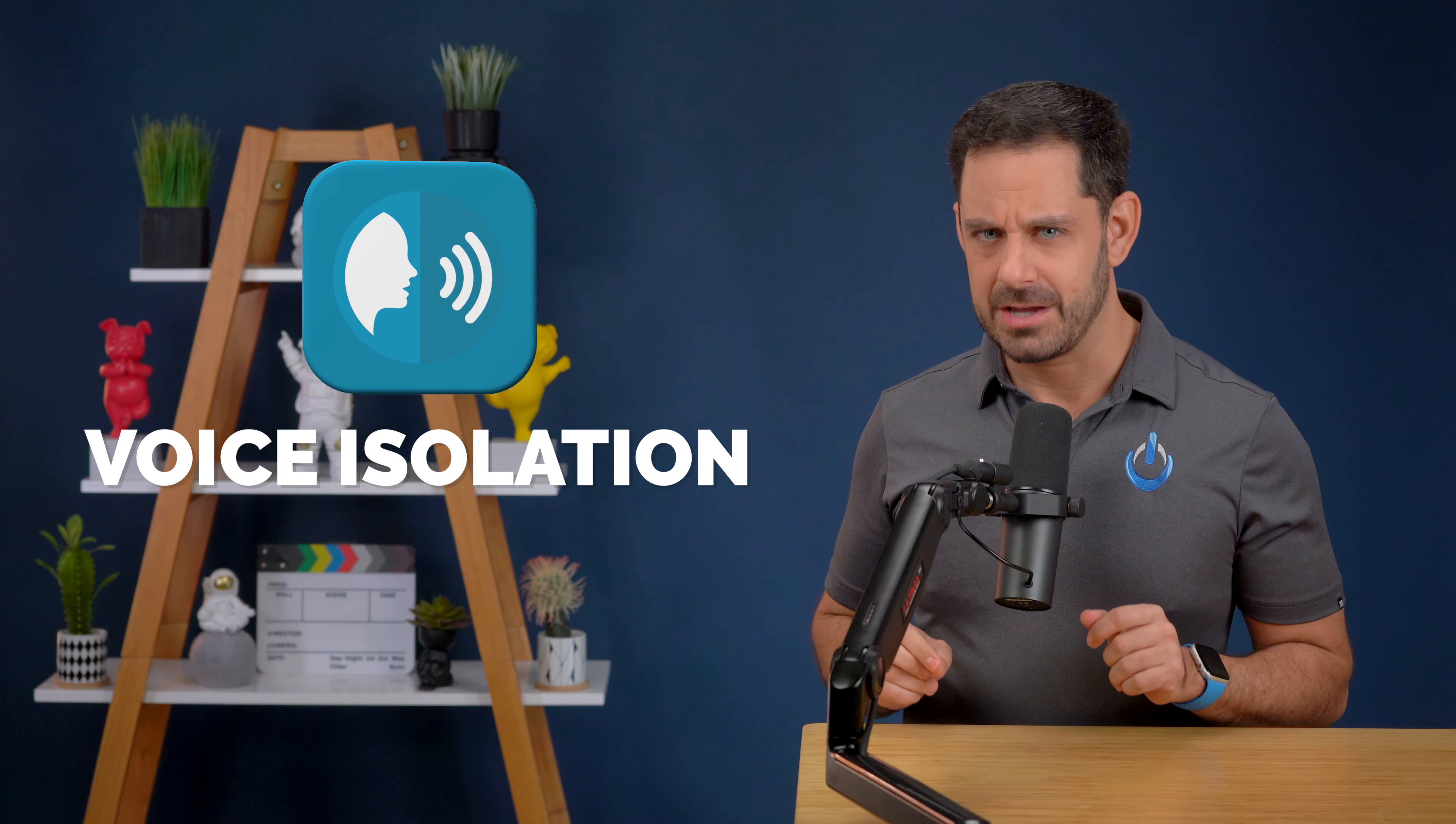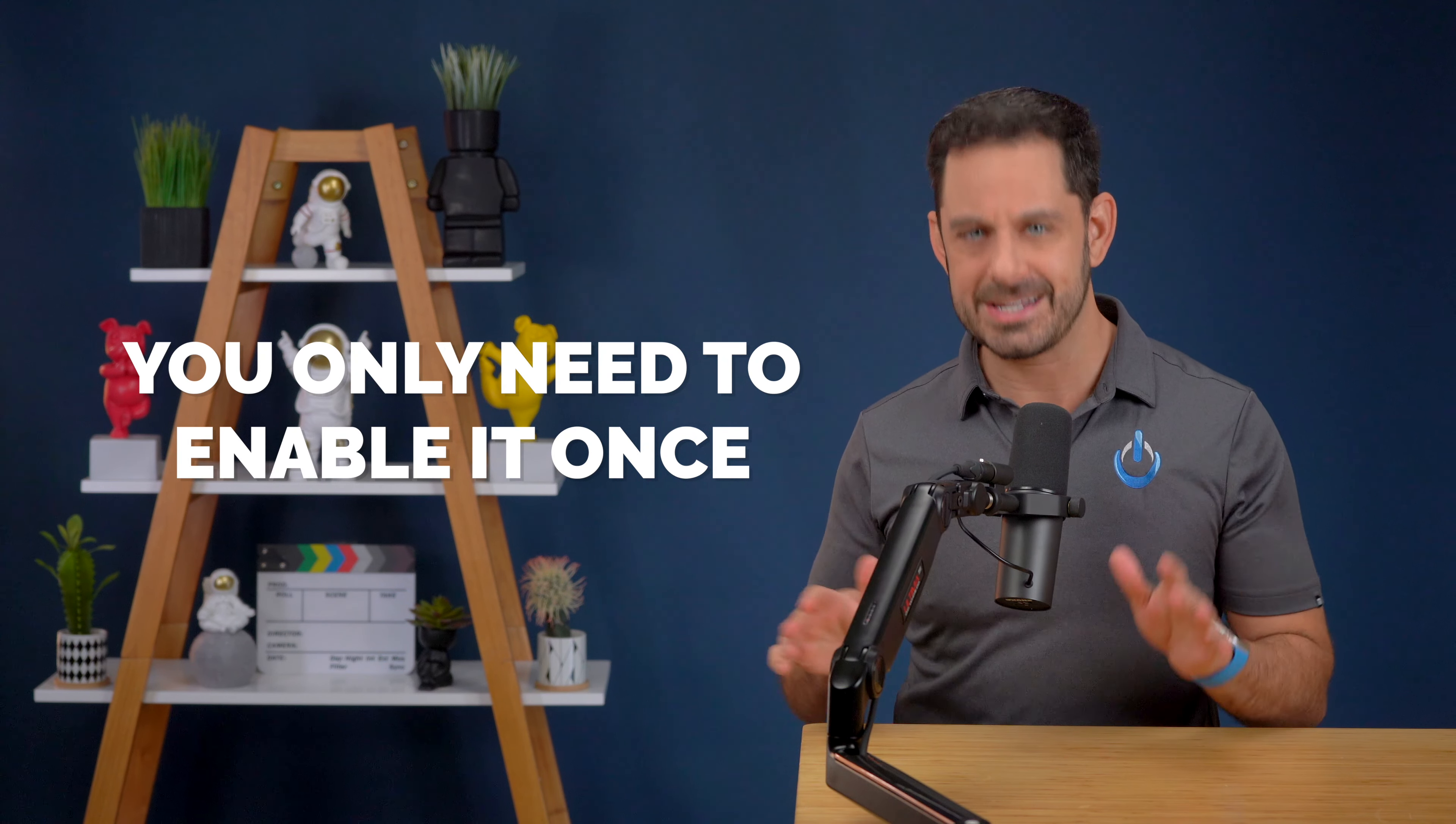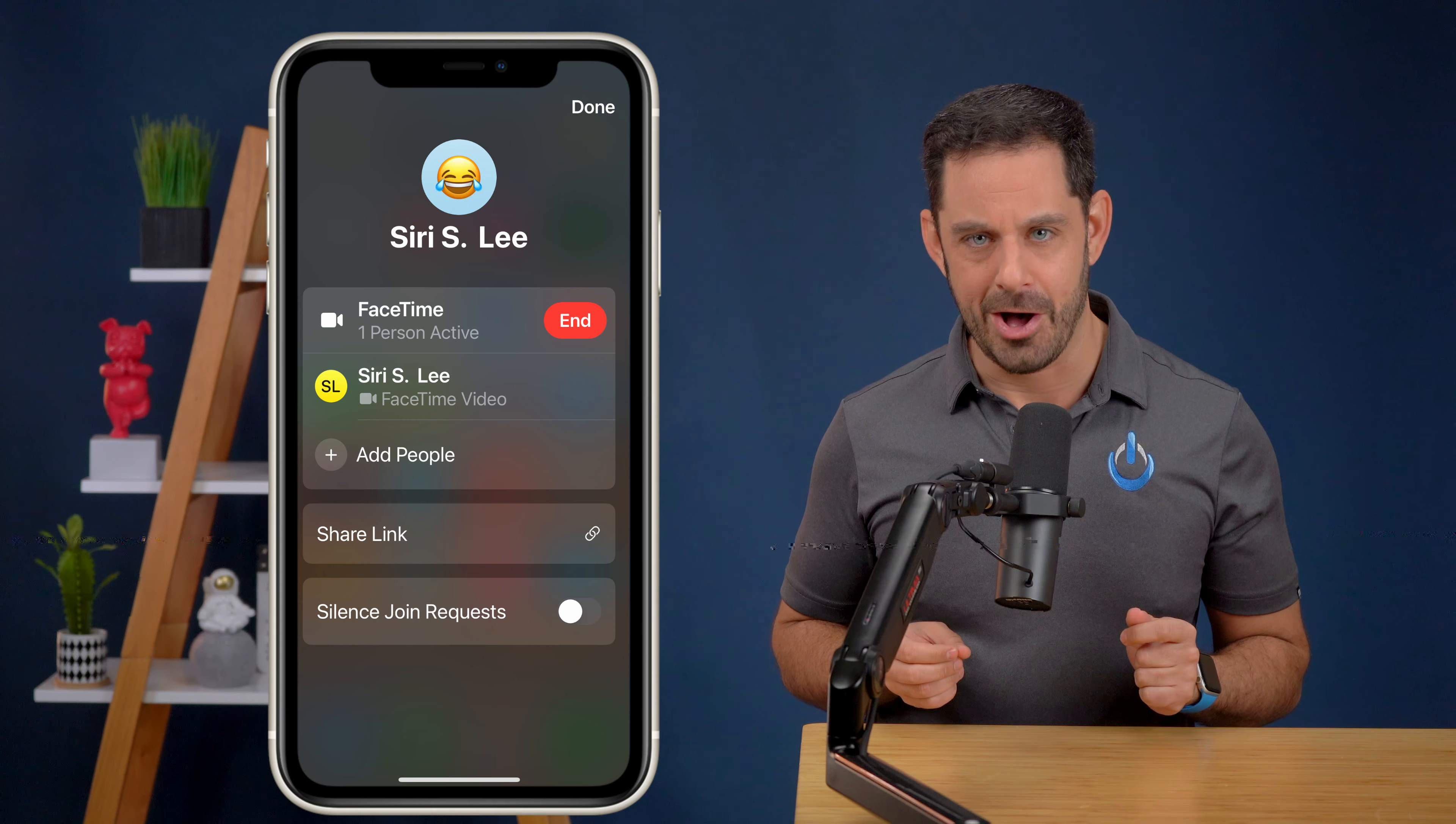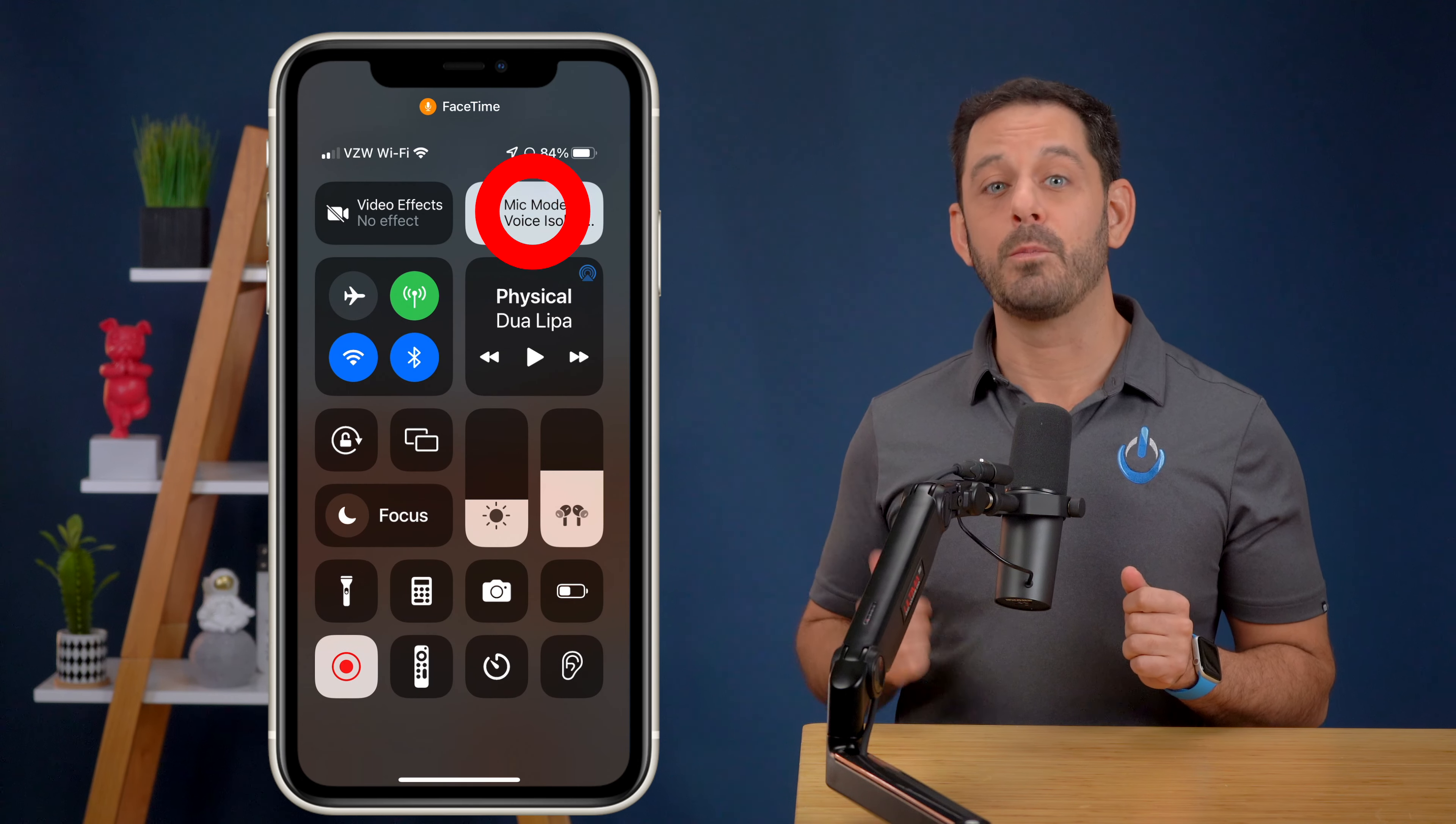Now you can use voice isolation to filter out those other noises. One of the things that you should know about this feature is that once you turn it on, it will automatically turn on the next time you place or receive a FaceTime audio or video call. To access voice isolation controls, you need to already be on a FaceTime call. Then just simply swipe down from the top right corner to access control center. Then tap on mic mode.